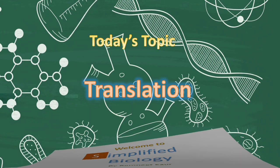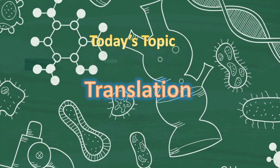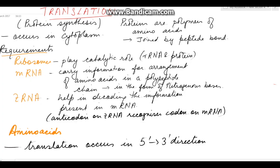Today's topic is translation or protein synthesis. Proteins are polymers of amino acids joined to each other by a peptide bond. The peptide bond is formed between the amino group of one amino acid and the carboxyl group of the adjacent amino acid.